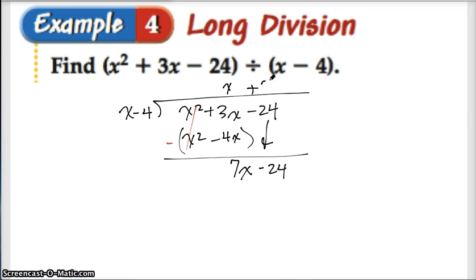7 times x is 7x, and 7 times a negative 4 is a negative 28. Now it's time for me to subtract. Subtracting is all good here, but not so much here. This becomes a plus sign because of the negative negative, and therefore I'm left off with the 4, my remainder is 4.